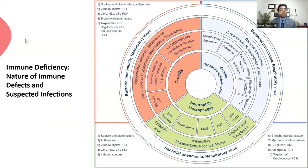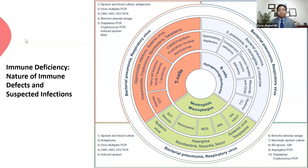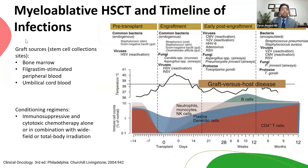Immune deficiency is significant. Looking at this pie chart, bacterial pneumonia and respiratory viruses are common across the board, but certain infections are determined by which arm of the immune system is impaired. For example, in cases of impaired neutrophils and macrophages — solid organ transplant, neutropenia, MDS, AML — patients may also develop Aspergillus, Mycobacteria, Nocardia, and Mucor. Knowing this guides diagnostic workup so we can catch these infections sooner, ideally within the first week, rather than letting the patient deteriorate.